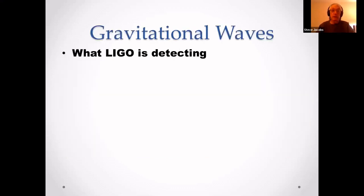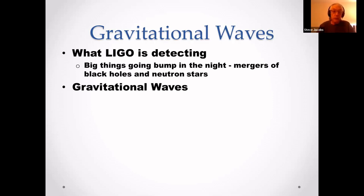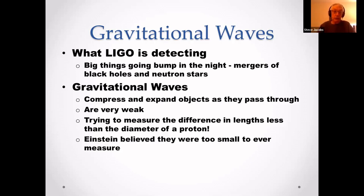So what does LIGO detect? Basically big things that go bump in the night — the mergers of black holes and neutron stars, producing gravitational waves.